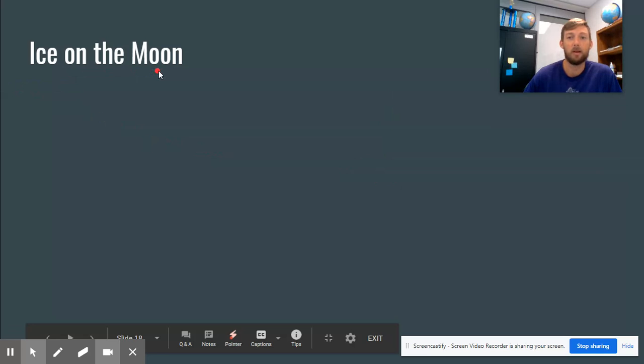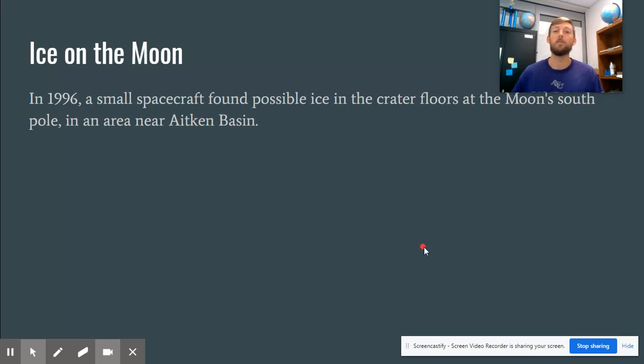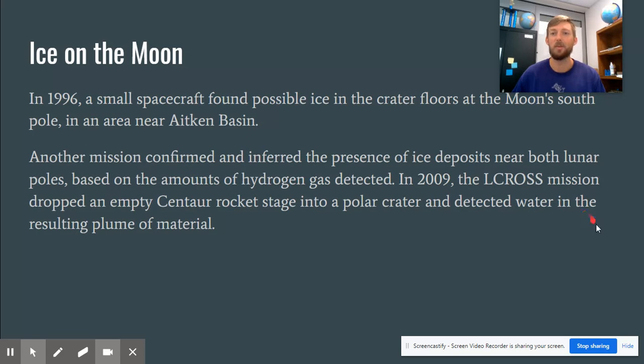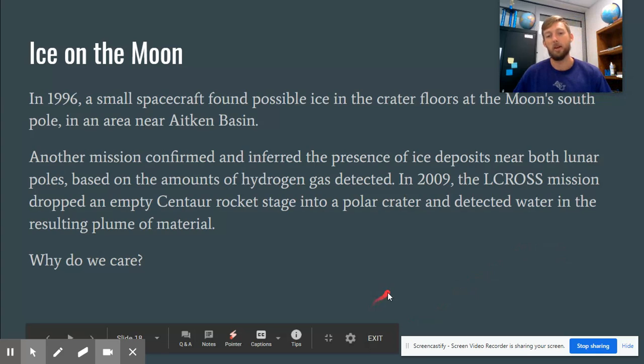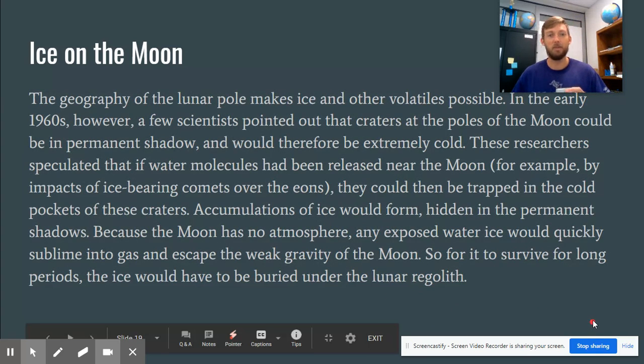Now, ice on the moon. This would be a big deal if we found ice on the moon. Why? Because ice is water, which is made up of H2O, hydrogen and oxygen. We could use the oxygen to breathe, the hydrogen for fuel. So pretty cool. That in 1996, a small spacecraft found what they think could be ice in the moon's south pole near the Atkin Basin. They confirmed this with another mission and found large amounts of hydrogen gas. The LC Ross mission dropped a rocket at the polar crater to detect water in the resulting plume of material. So why does this matter? Why do we care?